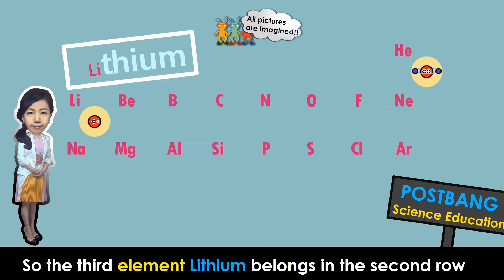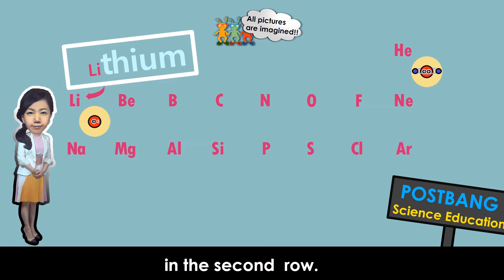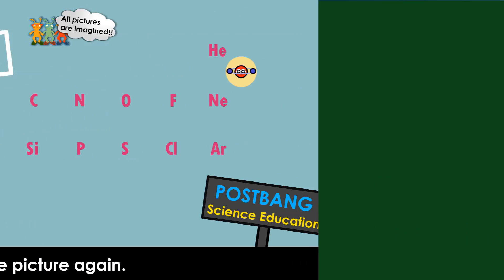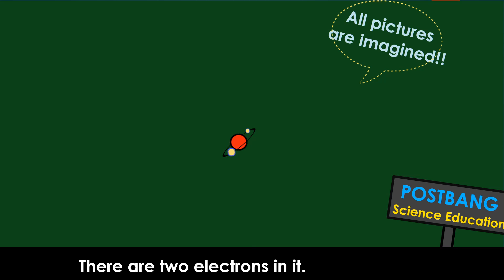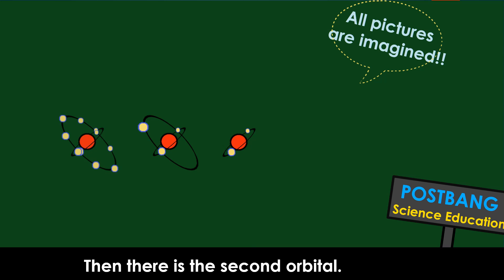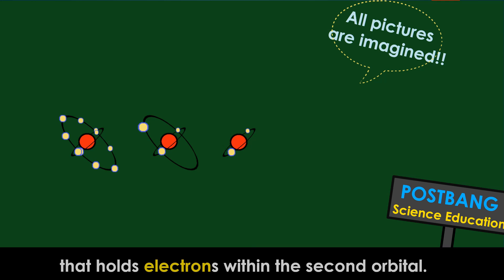So the third element, lithium, belongs in the second row, not the first. There are many more elements other than lithium in the second row. Let's look at the picture again. Let's go back to the lowest energy level. There are two electrons in it. Then there is the second orbital. Lithium is the first element on the periodic table that holds electrons within the second orbital.